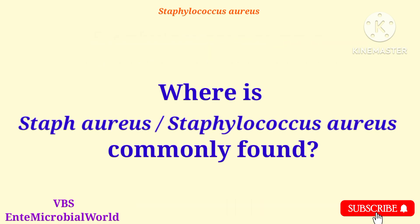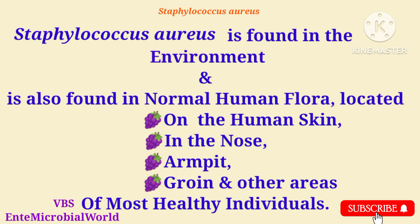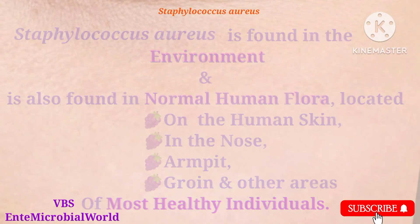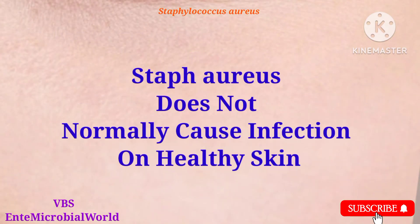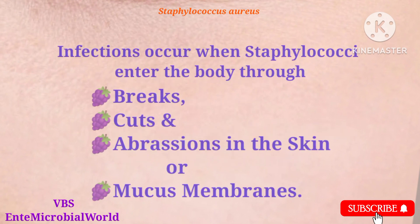Next, we are going to see where Staphylococcus aureus is commonly found. Staphylococcus aureus is found in the environment and is also found in the normal human flora located on the skin, in the nose, armpit, groin, and other areas of most healthy individuals. Staphylococcus does not normally cause infection on healthy skin.